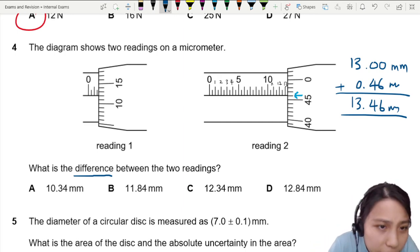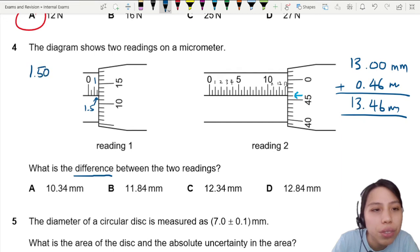The other one is 1.5. So if I read at this point, that is 1.5. I'm going to write there 1.50 millimeters plus the vernier scale. So that's part two.